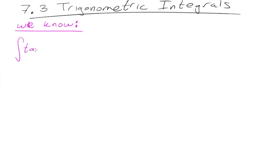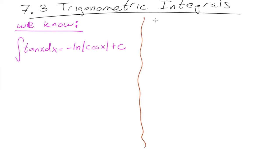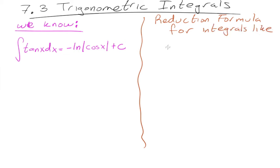Let's write them down right here. We know what the integral of tangent x is — do you remember how we found it? You turn it to sine and cosine and use substitution, right? So if you do that, you get negative natural log absolute value of cosine. We also know the integrals of all the other ones. What we want to do is figure out a reduction formula for integrals like the integral of tangent to higher powers.